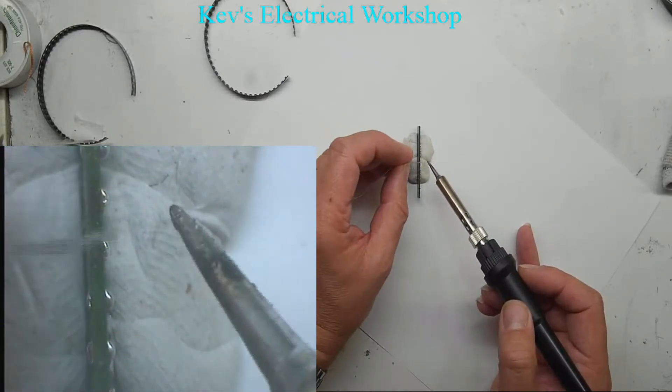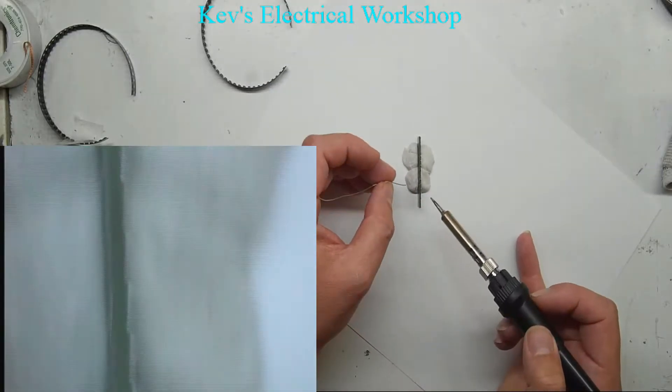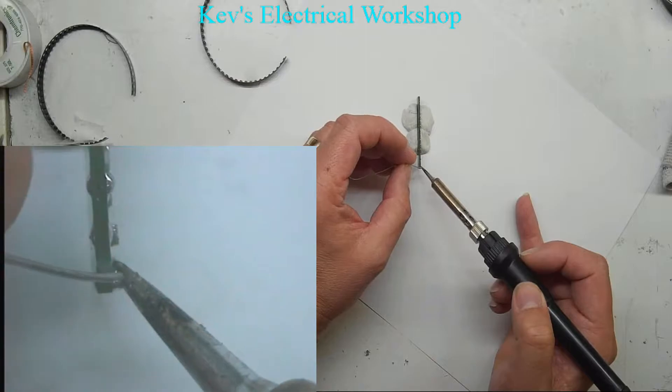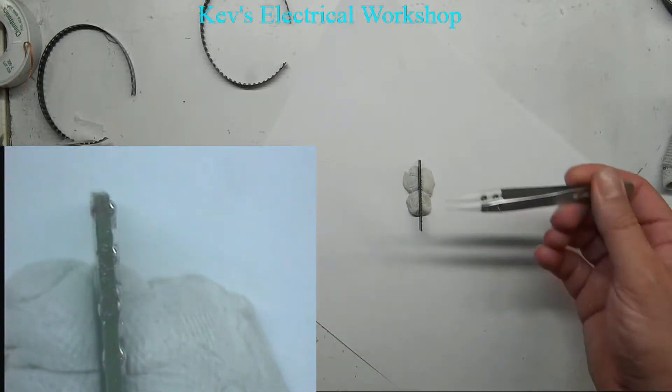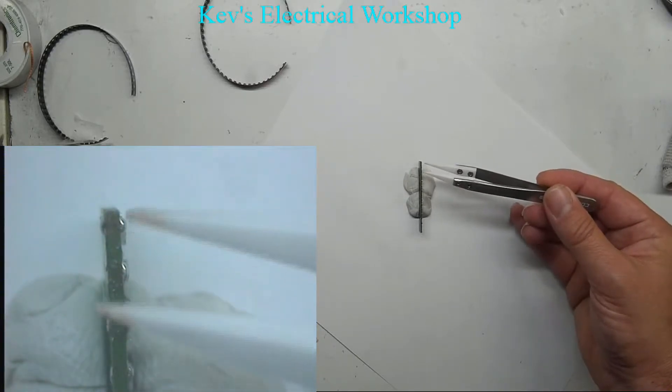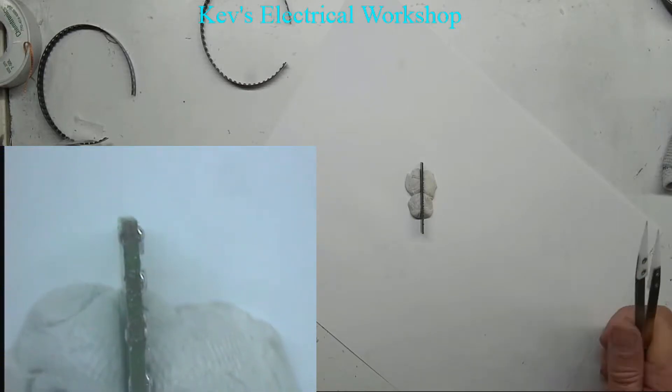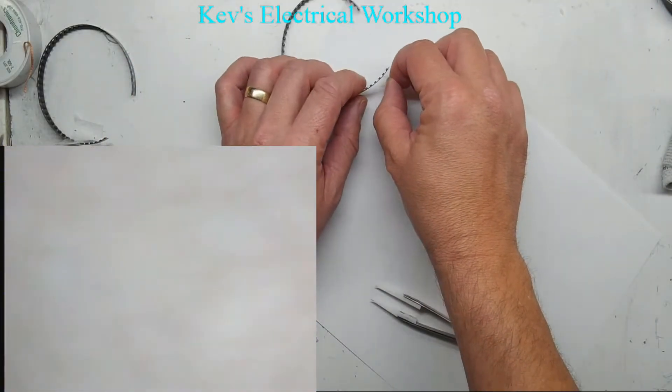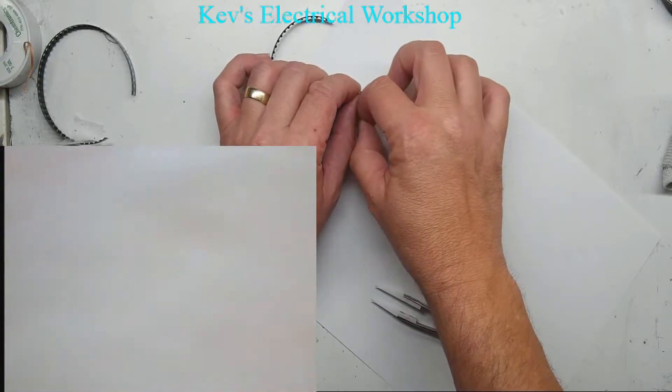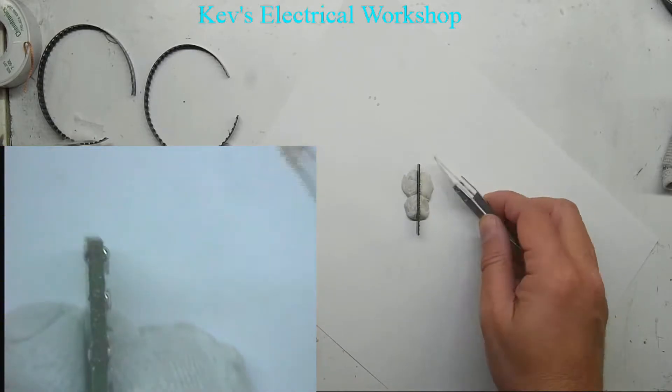The first thing I'm going to do is probably coat the top here with some nice thick flux. It's going to help hold these little components slightly in place and aid in the flow of the solder to the join.